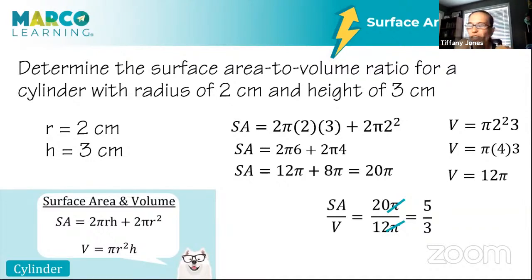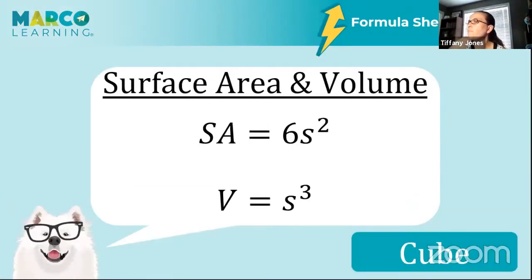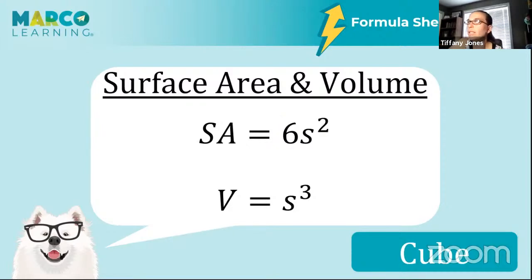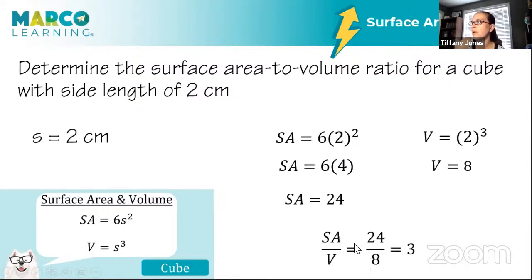Addressing a chat question about units for surface area to volume ratio — usually the exam doesn't require units for those. For the cube: surface area is 6s² and volume is s³. With a side length of 2: surface area is 6 times 4 equals 24; volume is 2 cubed equals 8. So 24 divided by 8 equals 3. That's the surface area to volume ratio. We've made it through the entire formula sheet!